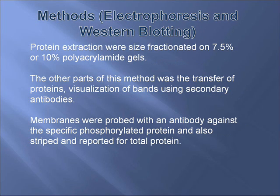The second method is electrophoresis and western blotting. Protein extracts were size-fractionated on 7.5% or 10% polyacrylamide gels. Proteins were transferred to nitrocellulose, blocked, and incubated with antibody to the particular protein of interest. Bands were visualized using secondary antibody tagged with horseradish peroxidase. For analysis of GSK3 and protein kinase phosphorylation, membranes were first probed with an antibody against the specific phosphorylated protein, then stripped and re-probed for total protein.